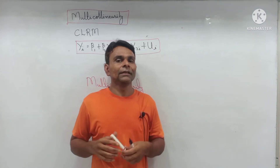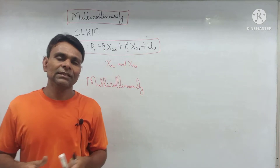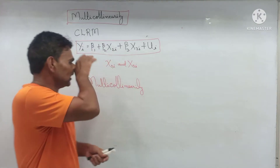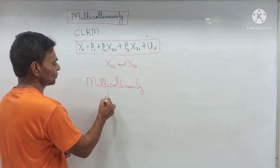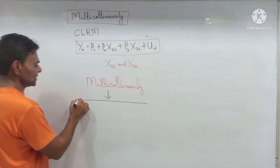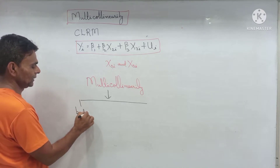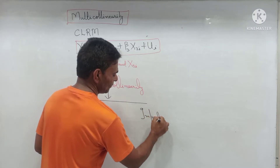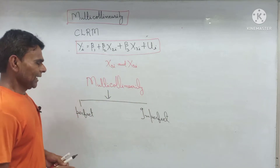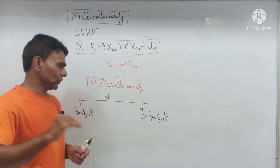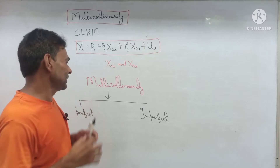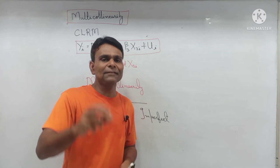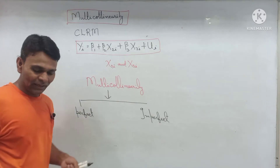Absence of multicollinearity is what the classical linear regression model assumes — no correlation between explanatory variables. Now, types of multicollinearity: there are two types. First, perfect multicollinearity, and second, imperfect multicollinearity. The classification depends on the degree and extent of the relationship between the explanatory variables.